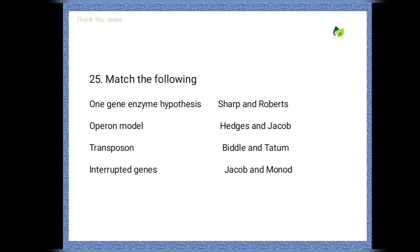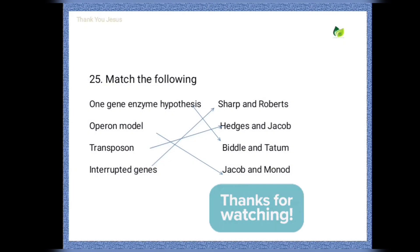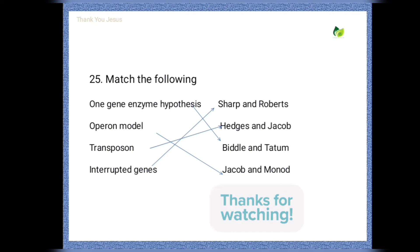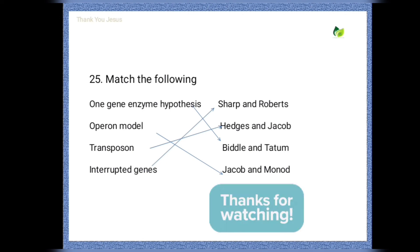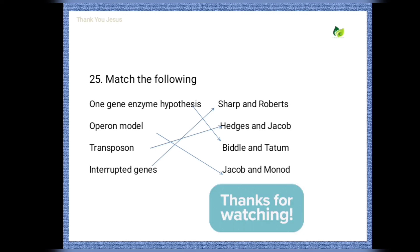Next question — match list one with list two: the one gene-one enzyme hypothesis was proposed by Beadle and Tatum; the operon model was proposed by Jacob and Monod; transposons were proposed by Hedges and Jacob; interrupted genes were proposed by Sharp and Roberts.